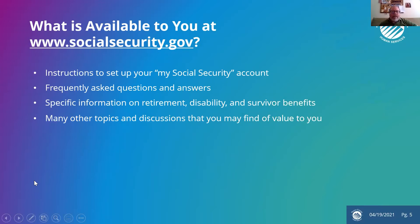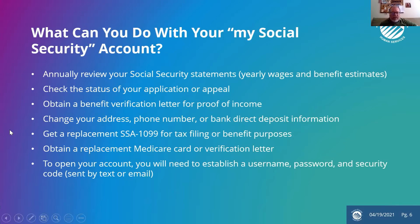So what's available at the website? There are instructions on how to set up your account, frequently asked questions and answers, and specific information about the programs we're going to talk about today, as well as many other topics of value. If you set up a My Social Security account, there are all kinds of things you can do — you can review your statements, verifying what your yearly wages and benefit estimates are for your current situation and past wage earning situations.